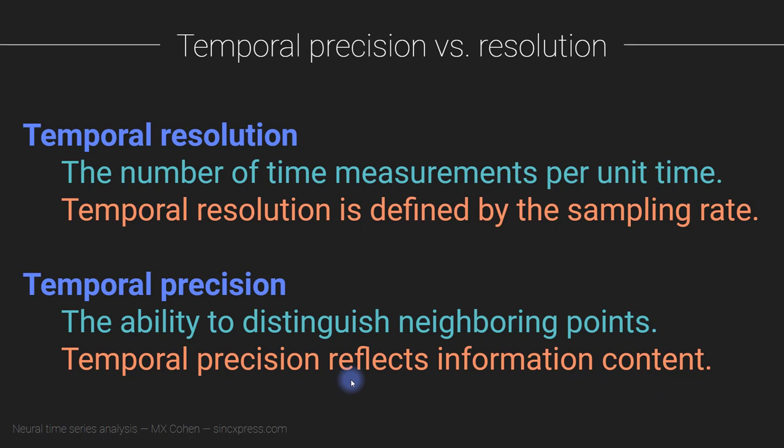Let's take an example. A typical EEG temporal resolution or sampling rate is around a kilohertz or a thousand hertz or a thousand time points per second. Sometimes people record at half a kilohertz or sometimes two kilohertz, but let's just say a typical temporal resolution is one thousand hertz.